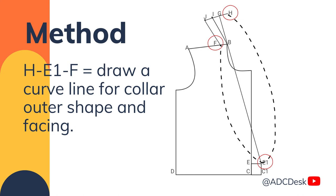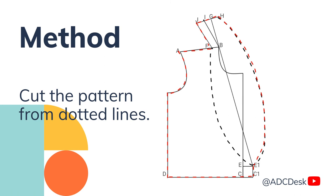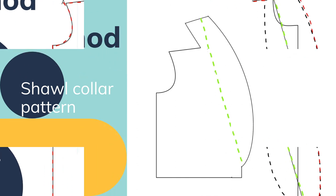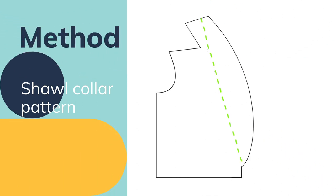Now, cut the pattern from dotted lines and G to A1 which is marked with a green dotted line will be your fold line or break line in collar. And this green color line will be the fold or break line of the collar. That's it. We are done with the shawl collar.